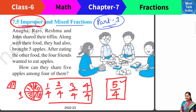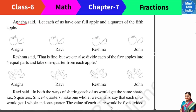Let us understand this with the example given in your textbook. In class, four children — Anagha, Ravi, Reshma and John — share their own Tiffin box. Today they have 5 apples with them. So the children here are 4, but apples are 5. How do they divide? Anagha has the idea that we give 4 apples — 1, 2, 3, 4 — to the 4 children.